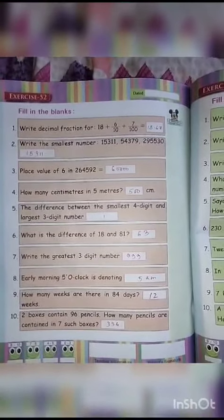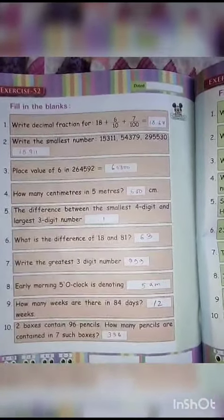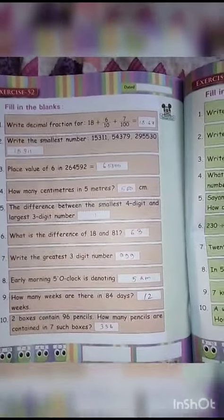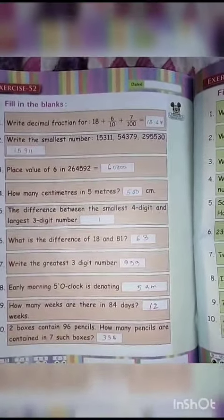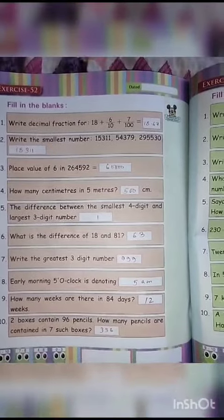Early morning 5 o'clock is denoting 5 AM. How many weeks are there in 84 days? 12 weeks.